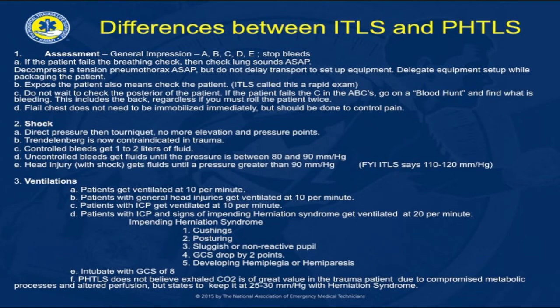If you have taken ITLS in the past or recently graduated from a paramedic program, you may notice some differences between these and PHTLS. PHTLS has a few minor terminology changes, which we will go over during the program, but also uses slightly different numbers in relation to things like shock and ventilations. For patients who have hypotension, uncontrolled bleeds should get fluids until the pressure is between 80 and 90 millimeters of mercury, and if there's a head injury, the pressure should be maintained at least 90 millimeters of mercury or greater.